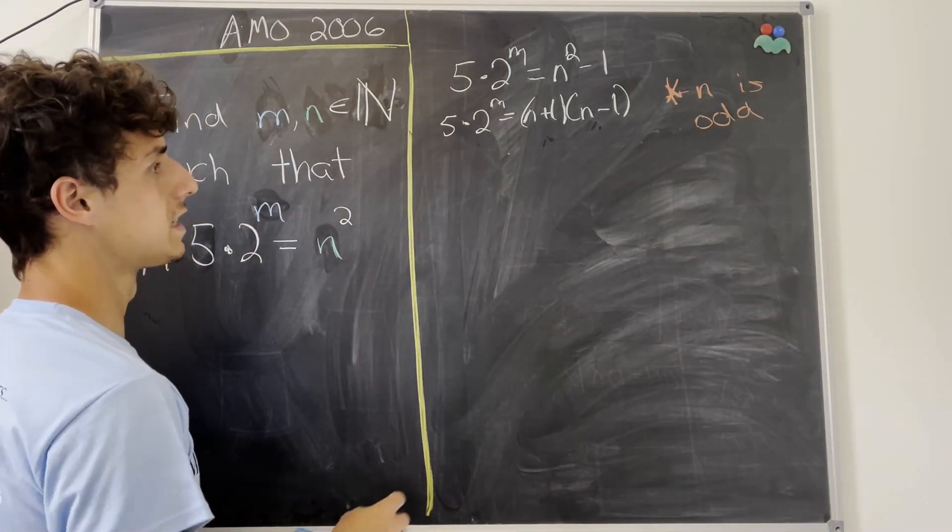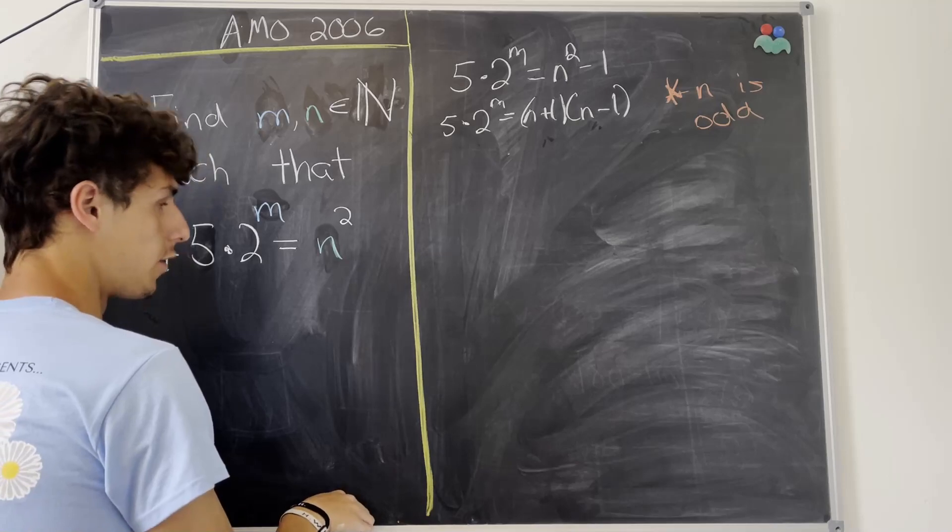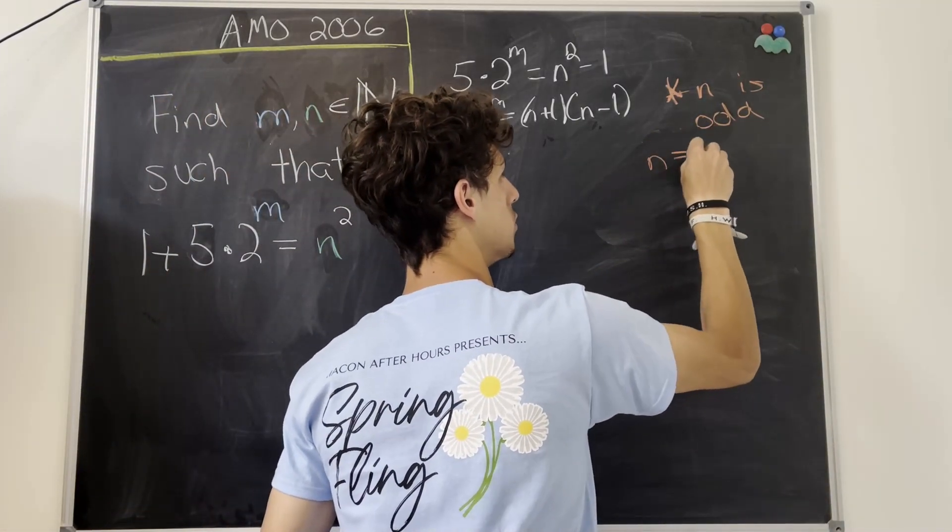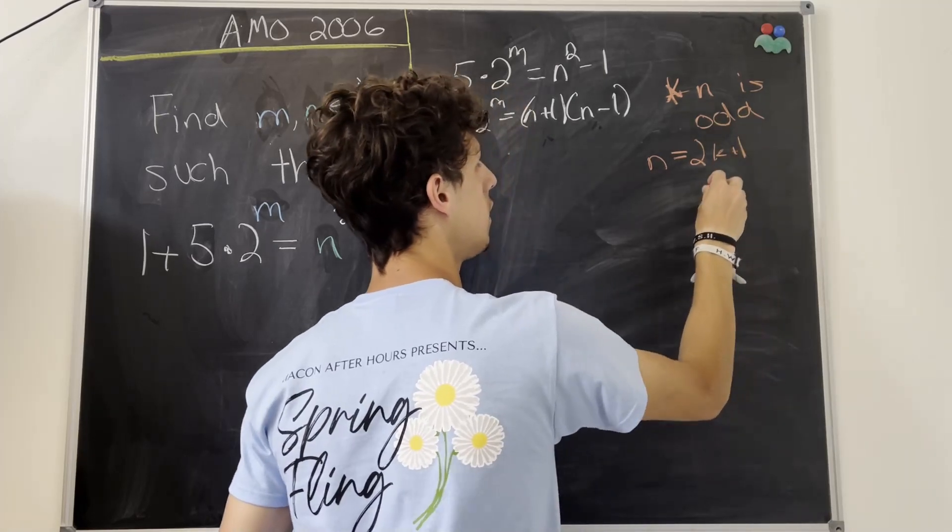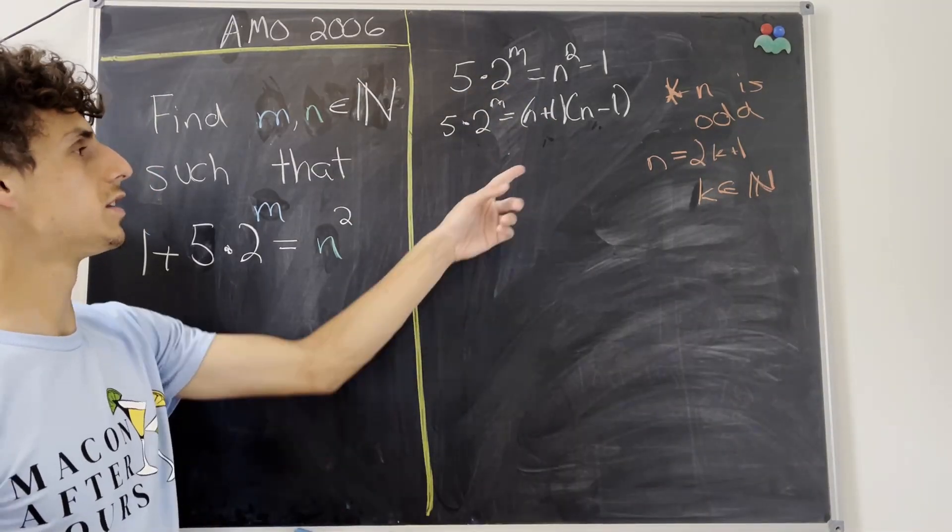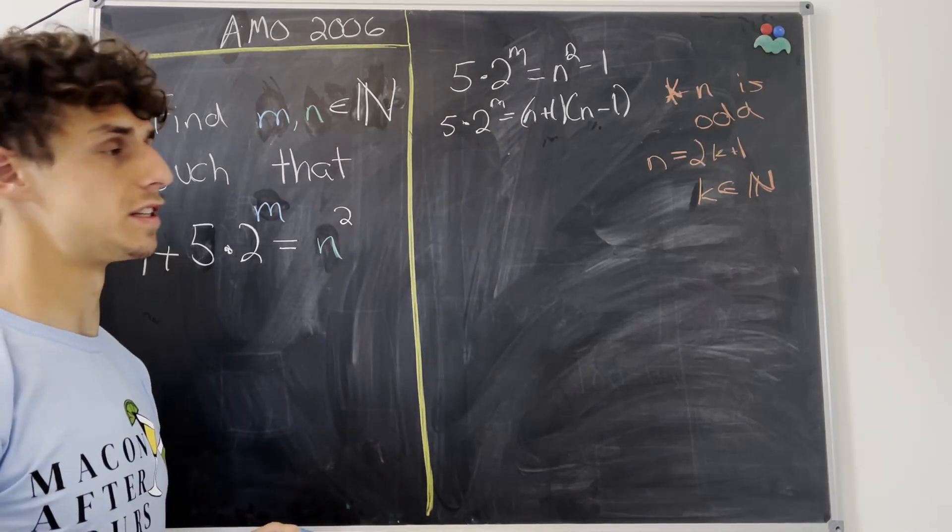But then we'll rewrite n in terms of another integer that we'll call k. So we'll say n is equal to 2k plus 1, where k is a natural number. Now let's plug in 2k plus 1 into this equation and see what we get.